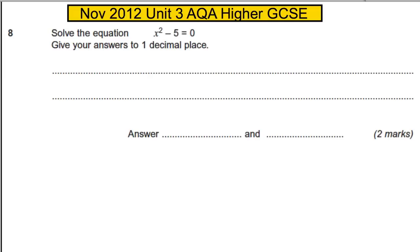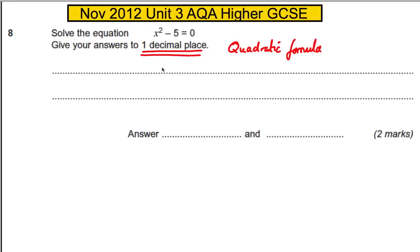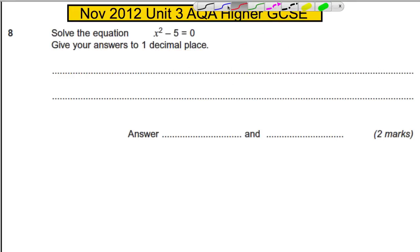We are asked to solve the equation x squared subtract 5 is equal to 0, giving the answer to one decimal place. There are numerous ways of doing it — the one decimal place requirement could make you think of the quadratic formula, and you could definitely do that. I'm going to show you a few methods, so let's start with what I think is the easiest method.